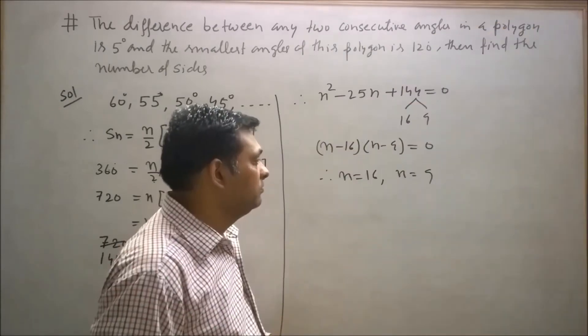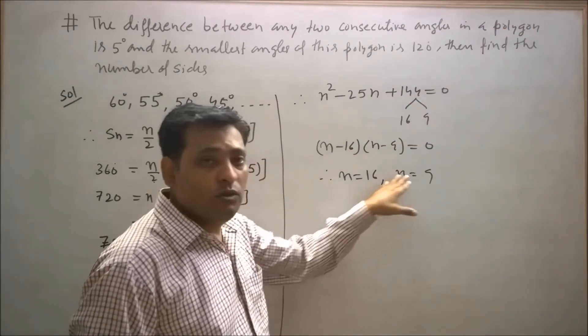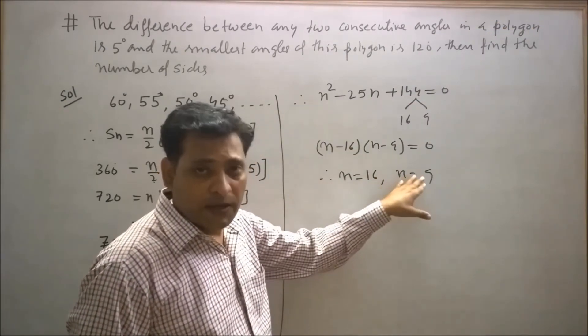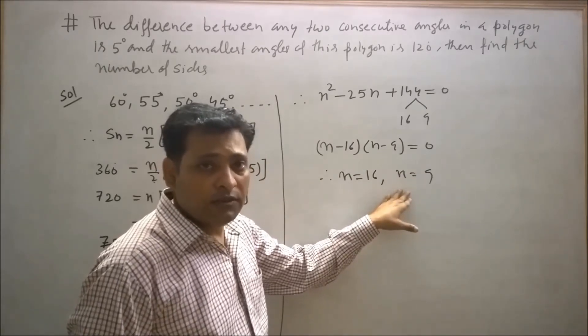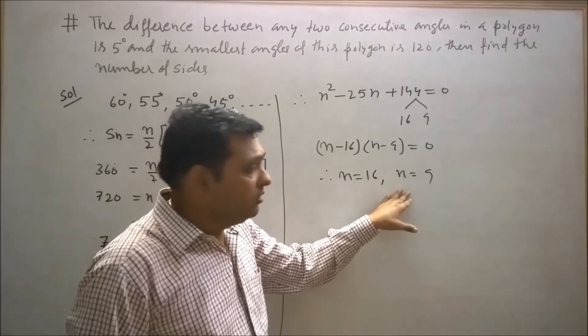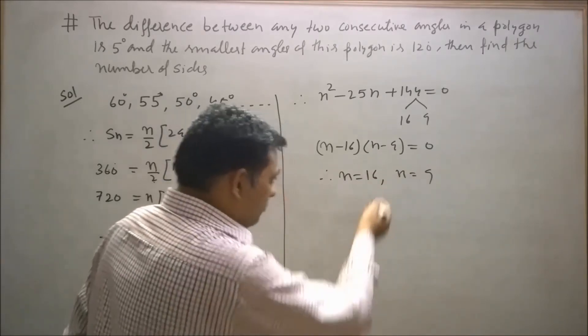Here we get two answers: n = 16 and n = 9. But one answer is correct and the other will be rejected. Let's try to find how we can reject one of the answers.